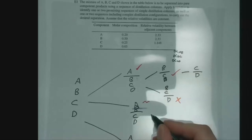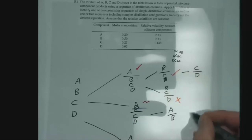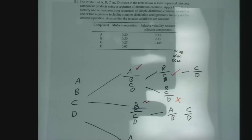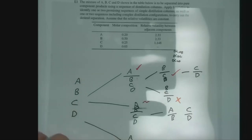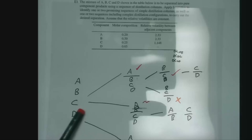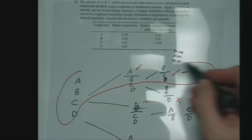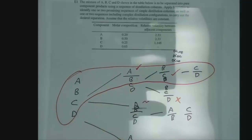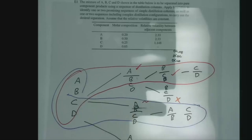The only other option we had was the middle option, which involves doing an A/B separation followed by a C/D separation. In this case, A/B and C/D splits are getting near equimolar splits — not perfect but close. We're also doing the most difficult separation towards the end. So this middle sequence is potentially the next most favorable option.